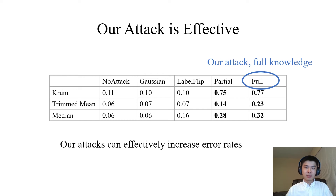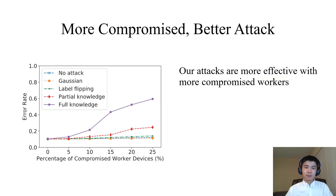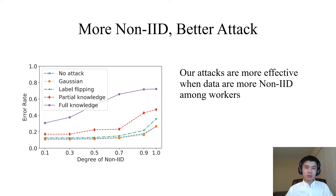From the table, we can see that our attacks are very effective. We also explore the impact of the percentage of compromised workers. This figure shows the curve of error rate versus percentage of compromised worker devices when trimmed mean aggregation is used. When the percentage of compromised workers increases, the error rate under our attack also increases. However, the baseline attacks are still not effective even when many workers are compromised. We also explore the impact of degree of non-IID of the training data, finding that when the degree of non-IID becomes larger, all attacks become more effective.